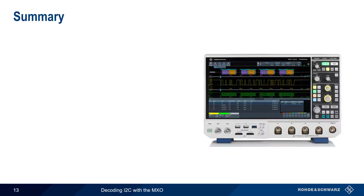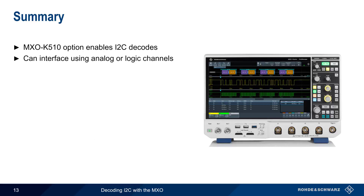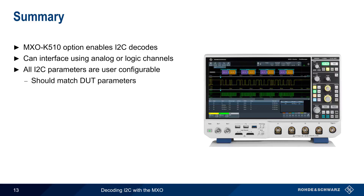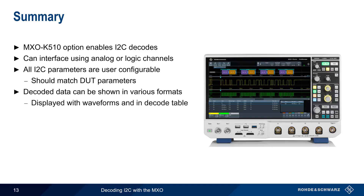Let's end with a brief summary. The K510 serial decode option enables I2C decodes on MXO Series Oscilloscopes. Connections to the DUT can be made using either the scope's analog channels or using logic channels. All I2C protocol parameters are user configurable and should match the DUT parameters. Decoded serial data can be displayed in a variety of formats such as hex, binary, ASCII, etc., and is displayed both with the waveforms and in a separate decode table.